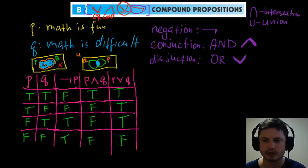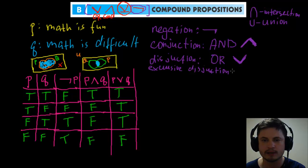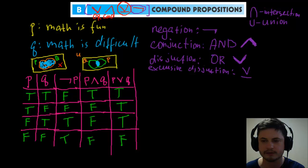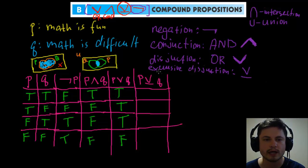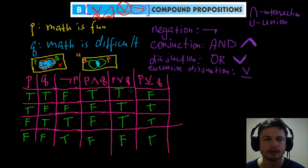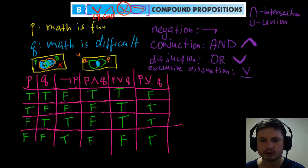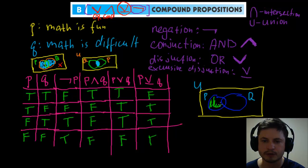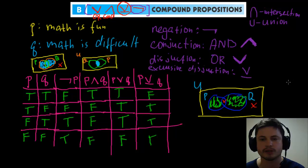The last symbol is exclusive disjunction, written as ⊕. It means 'only or' — it does not include 'and.' It's only true when exactly one of the propositions is true, but not both. So the first row where both are true is false, and the last row where both are false is also false. On a Venn diagram, it's both circles but excluding the overlapping middle and the outside.